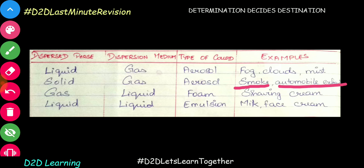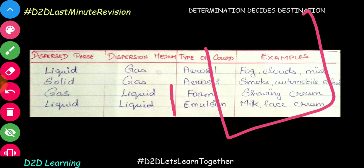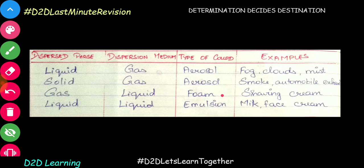Now, liquid as the dispersion medium. Gas dispersed in liquid gives foam — for example, shaving cream and snow spray work on this basis.